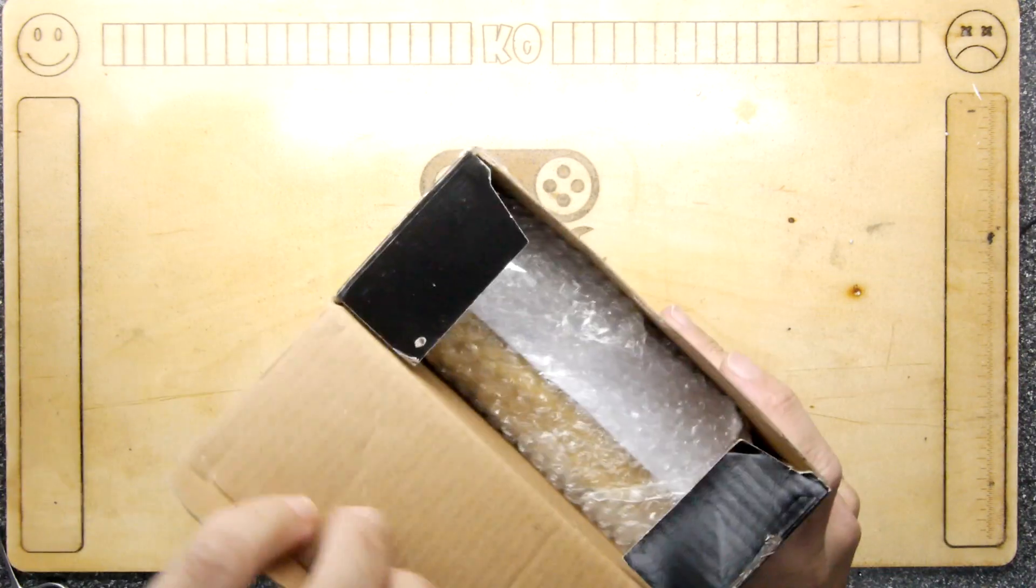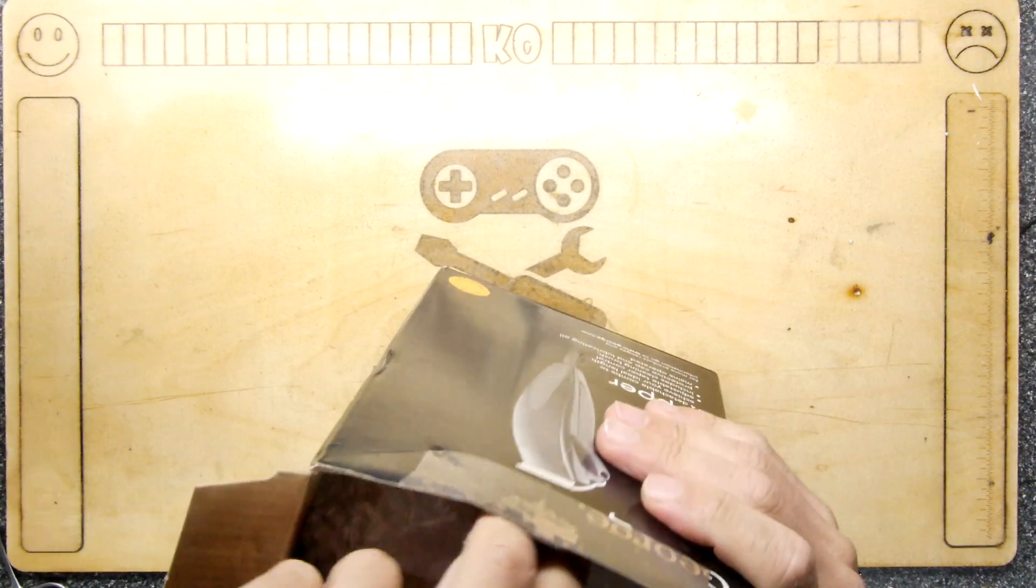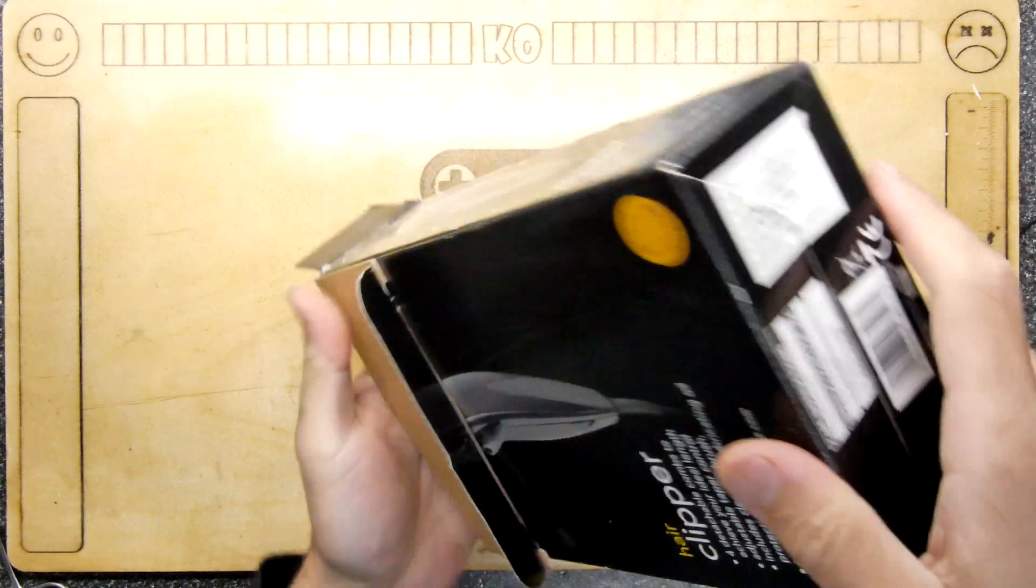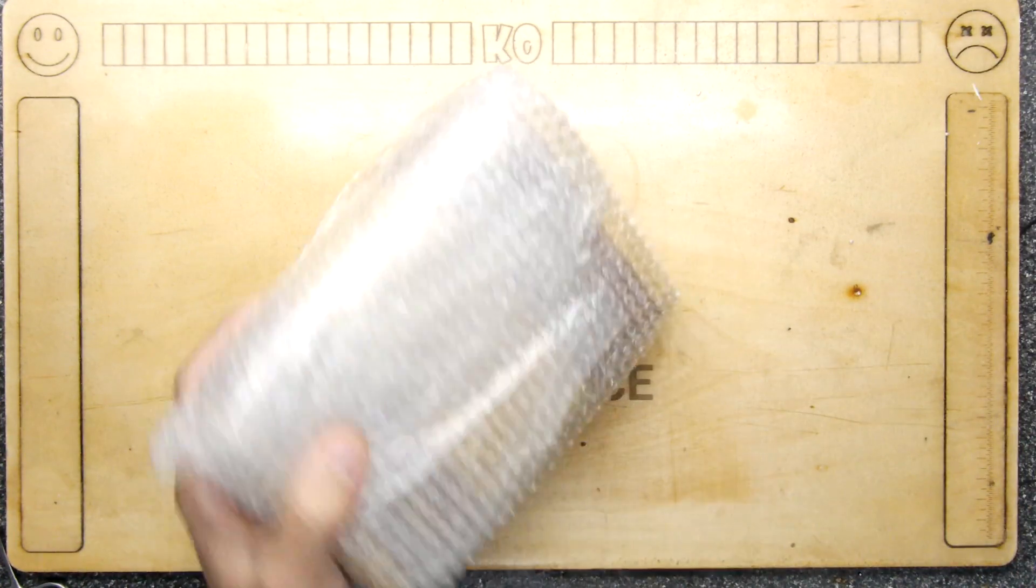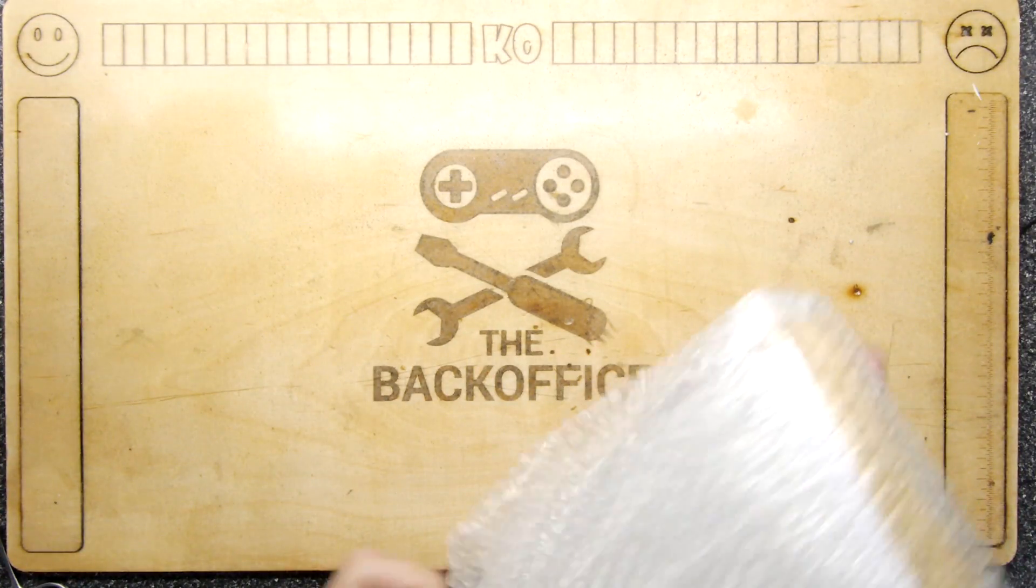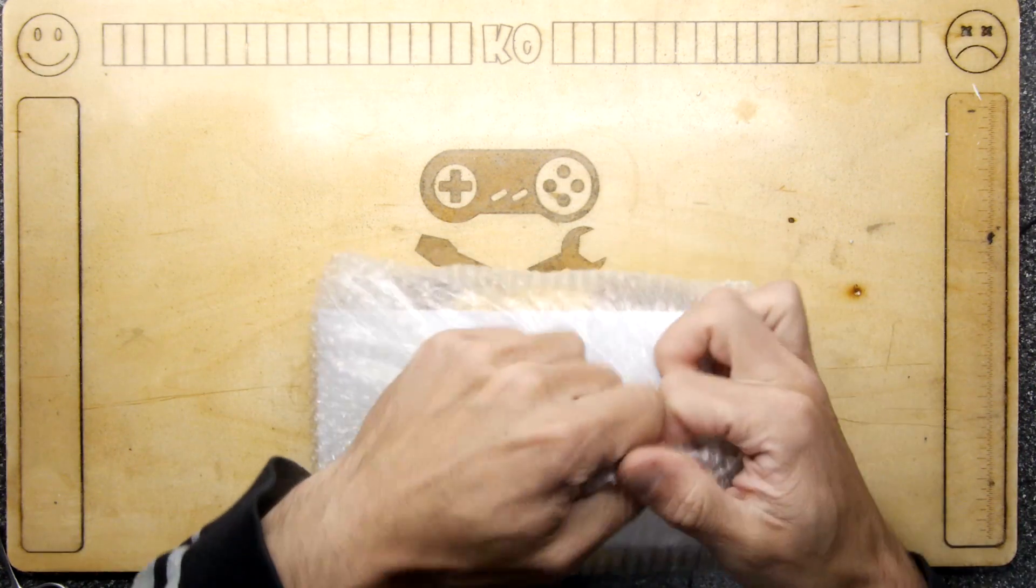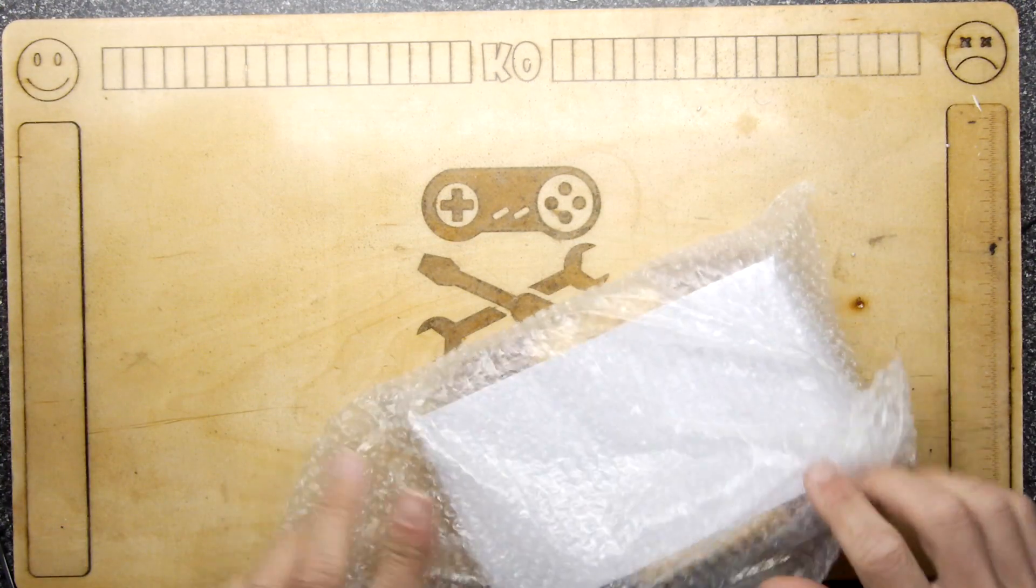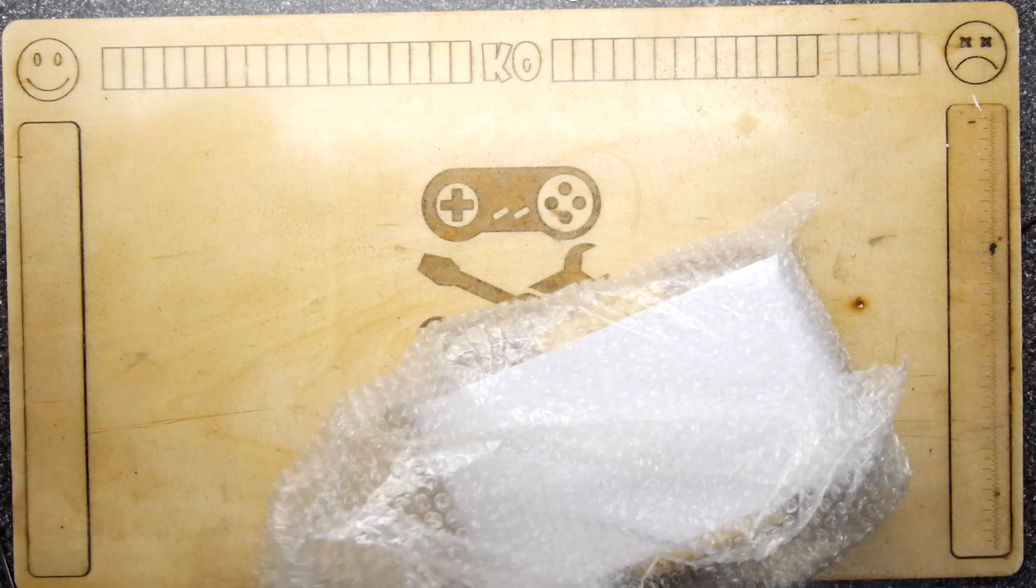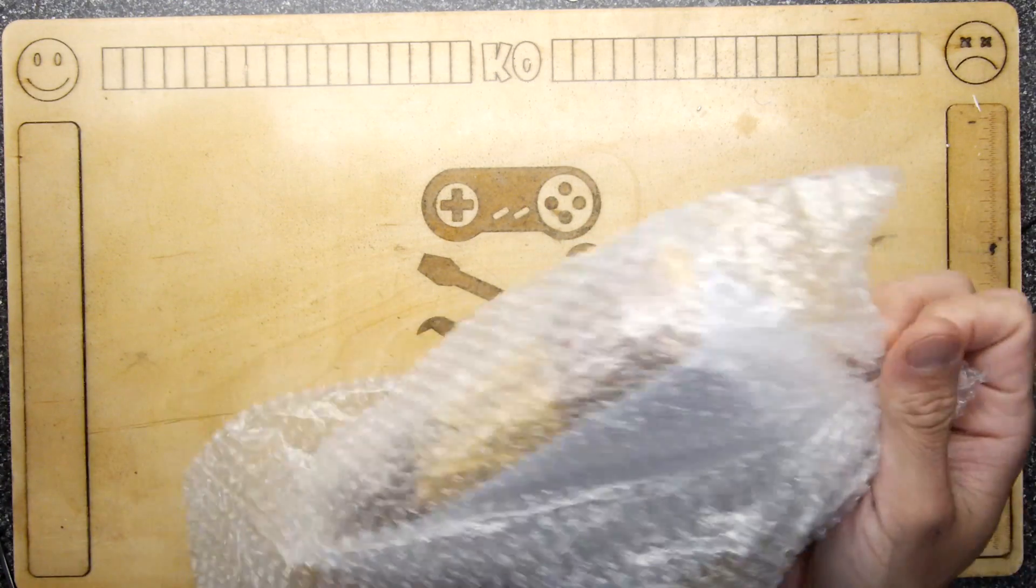So this is the floppy drive for an Atari Mega, and the reason I have a floppy drive for an Atari Mega is that when I got my Mega ST not so long ago unfortunately it didn't come with a floppy.